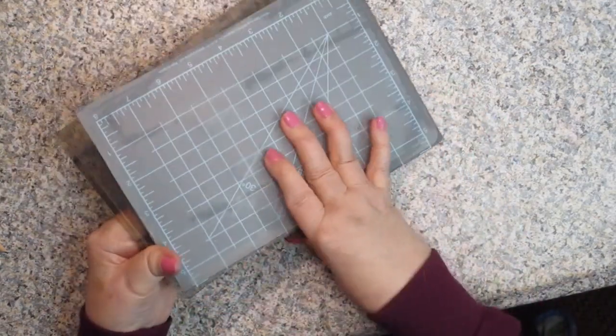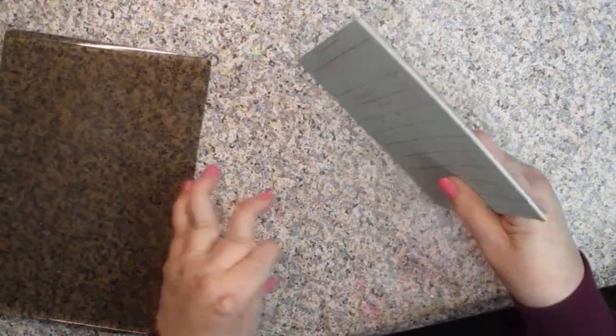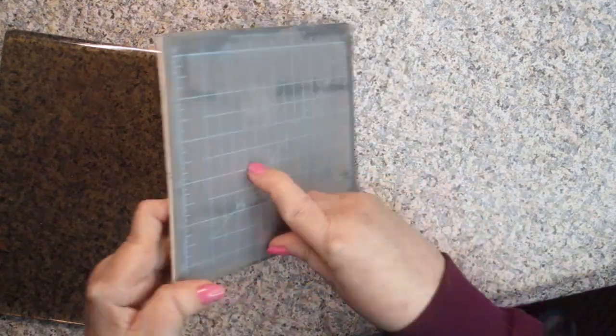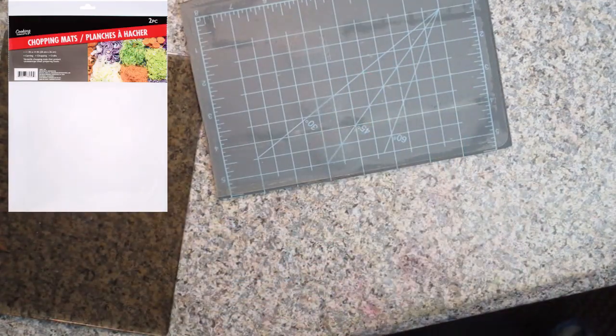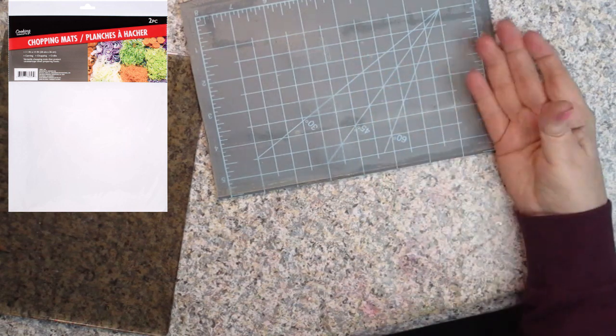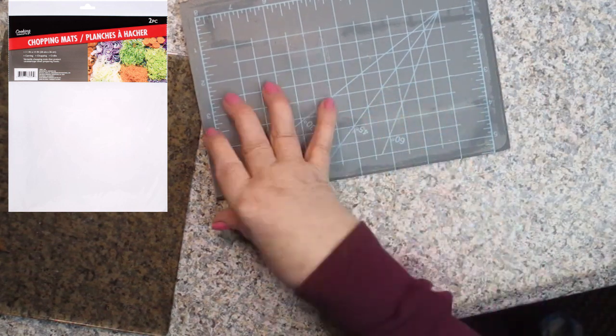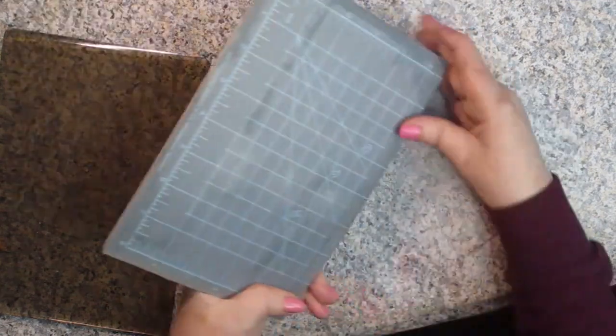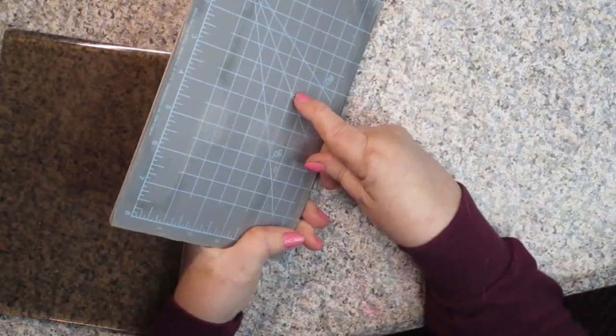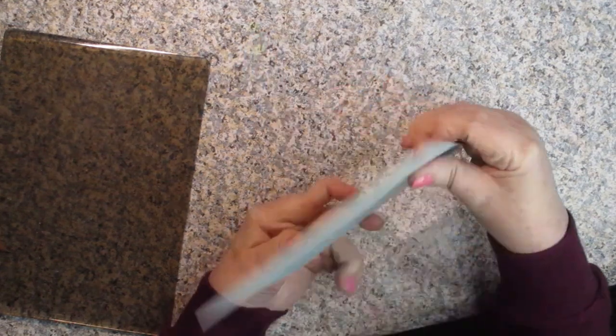Then we just cut it down using this plate as the prototype to just cut along the side of it. And then, because mine was a little bit too thin, I went to the Dollar Tree and I bought the chopping mats. They come in a package of two.